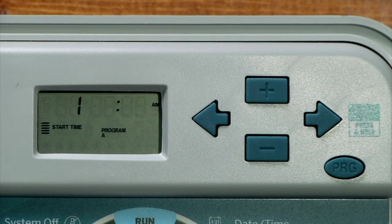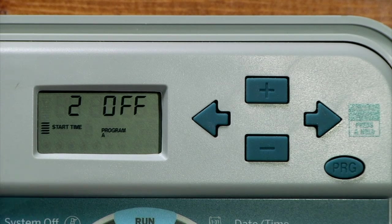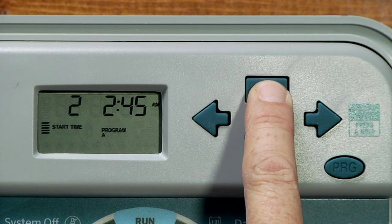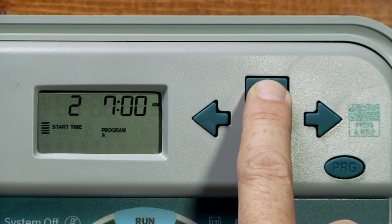Since we want to water multiple times a day, use the right arrow to advance to the second possible start for program A and use the plus button to proceed forward to 10 a.m., which will be the second complete cycle for the program.